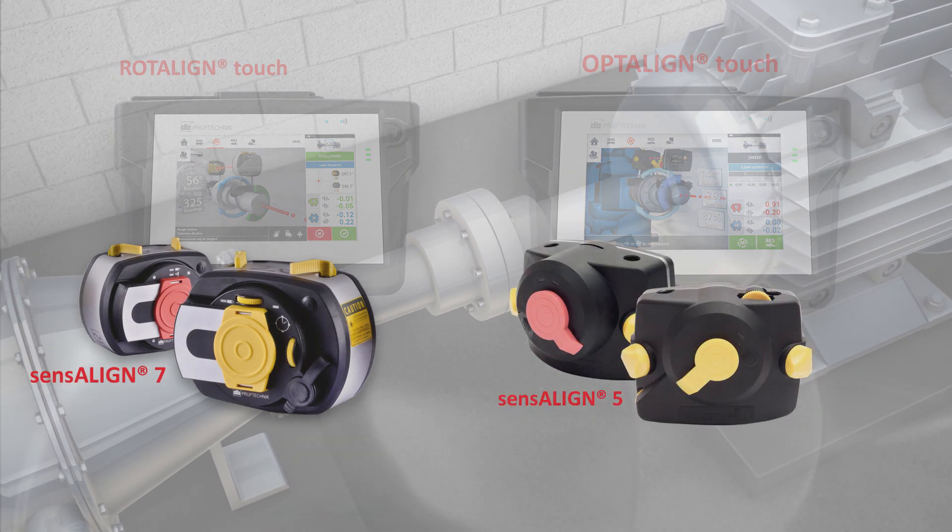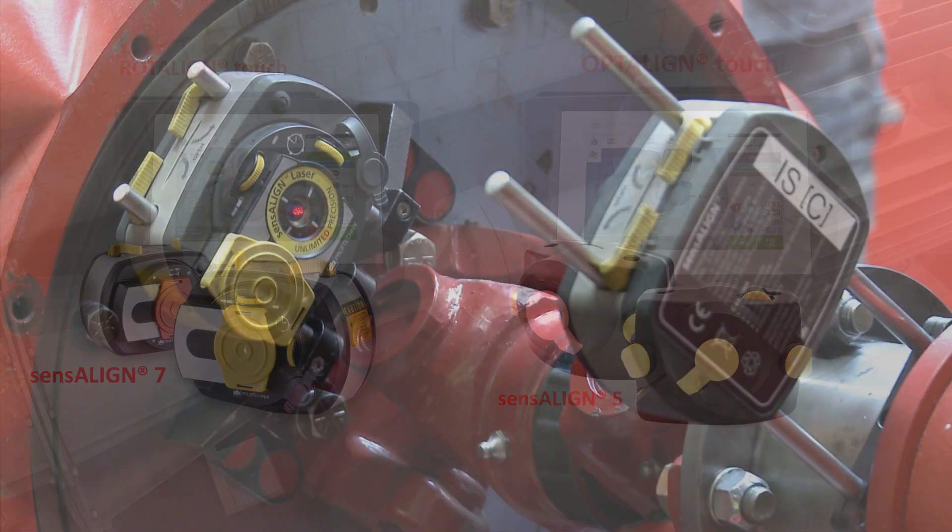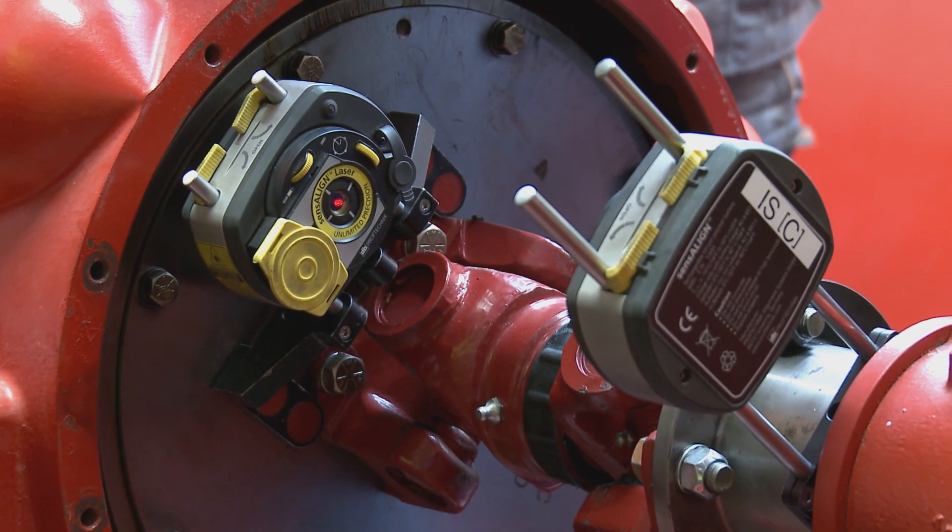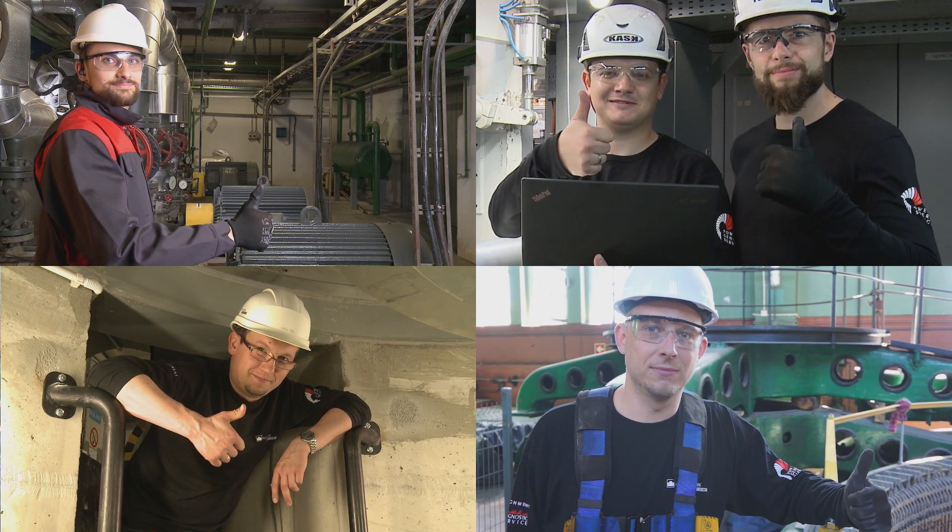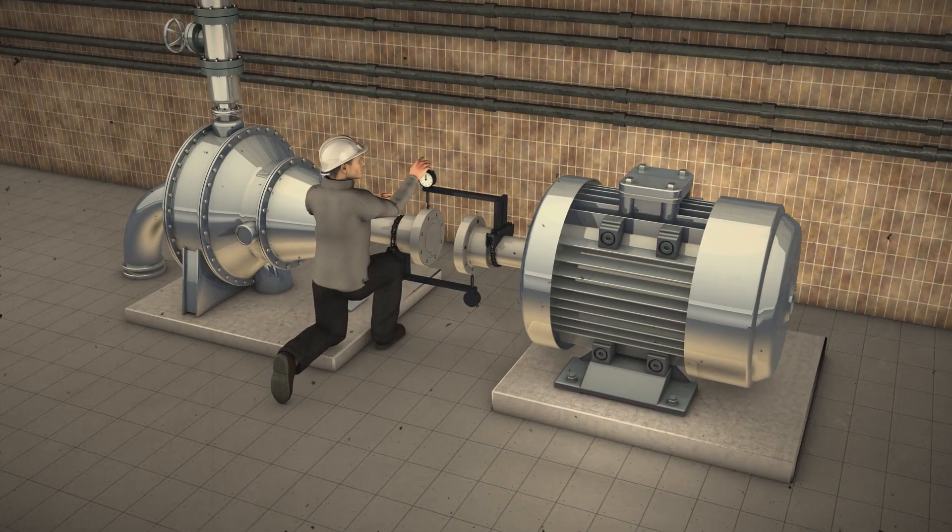The laser sensor measurement technology that makes the difference in shaft alignment. There is no secret behind Pruftechnik's unique measurement technology. SensALIGN for precision shaft alignment. Let's see how alignment conditions were measured in the past.